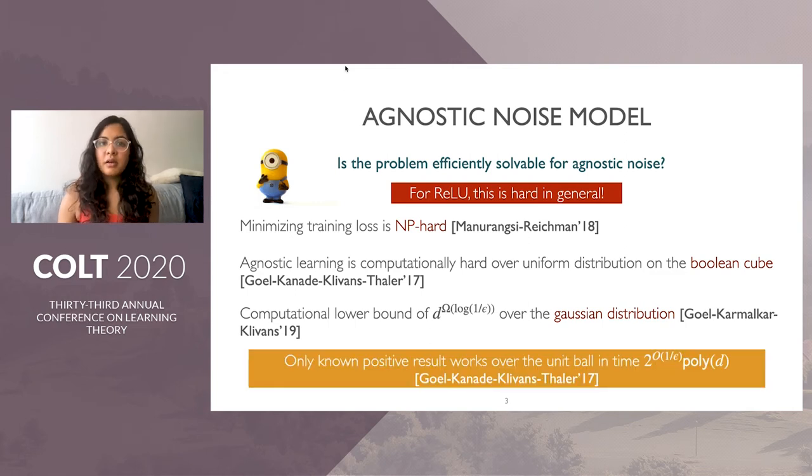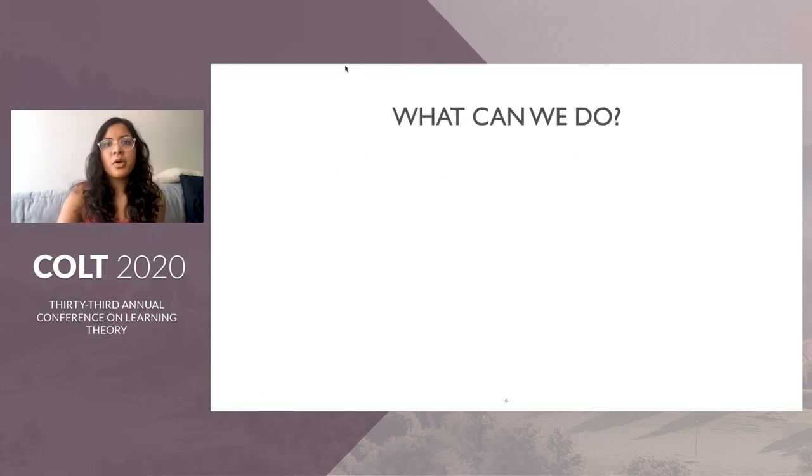The only positive known result that works distribution independent requires the input be on the unit sphere and runs in time exponential in the error parameter but polynomial in dimension. These results are scale sensitive and cannot be directly applied to the Gaussian distribution where the norm is much larger. So maybe our goal is too strong.